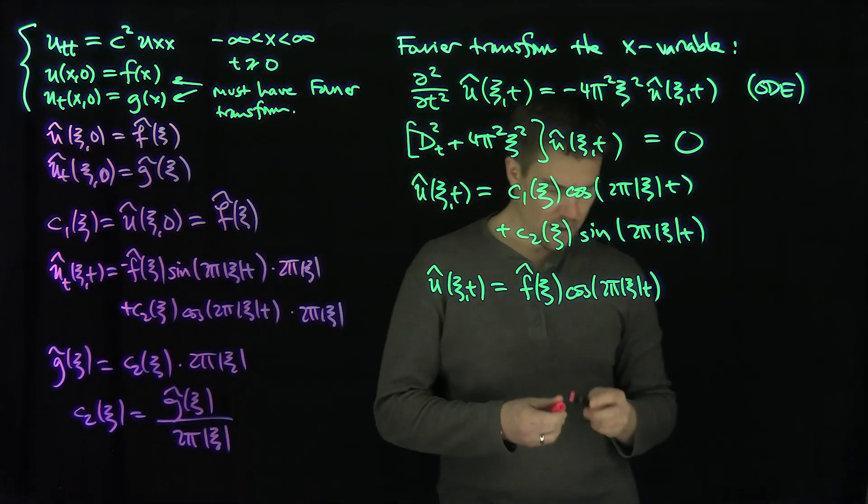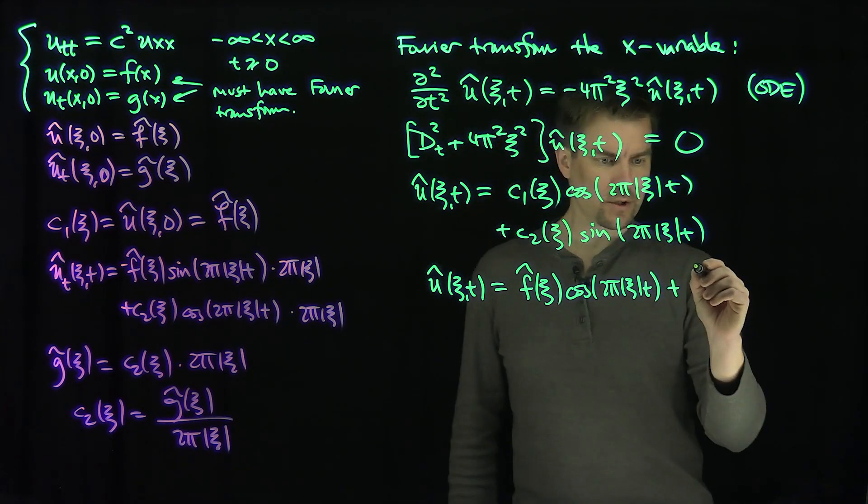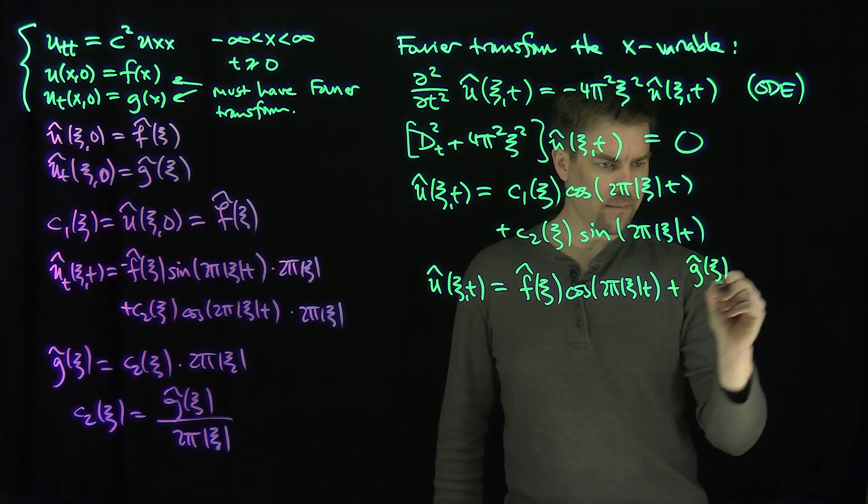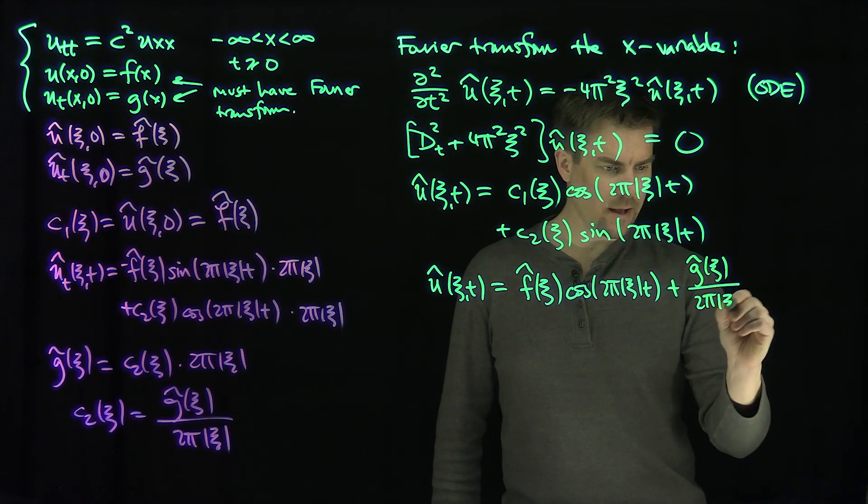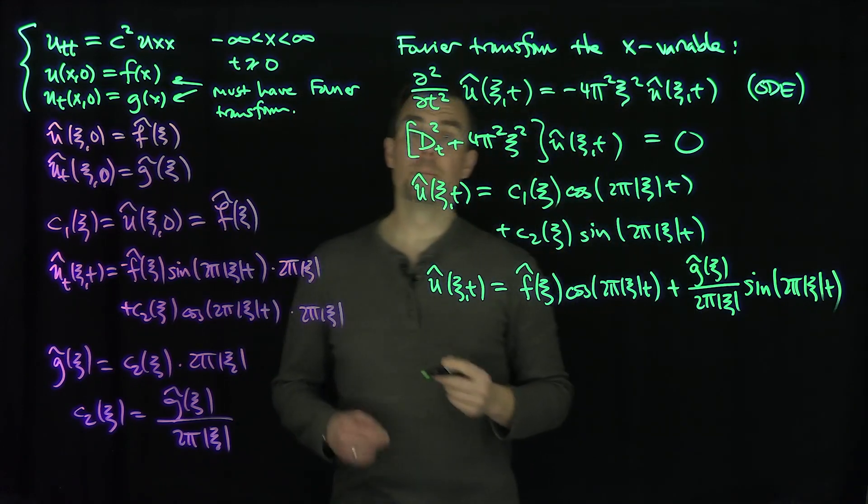So now we fill this into our formula over here. And so now we have plus, plus what? Plus g hat xc over 2 pi xc sine of 2 pi xc t. Beautiful.